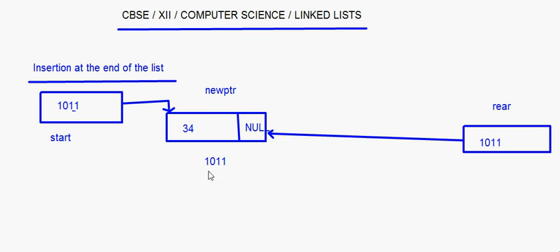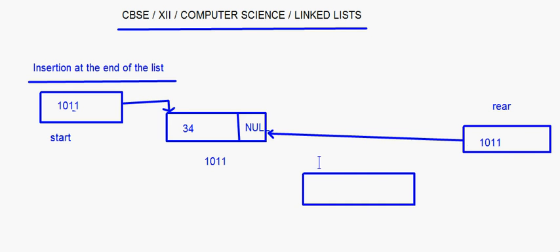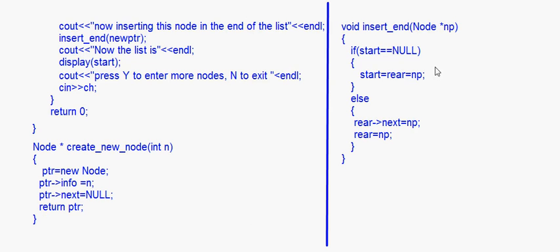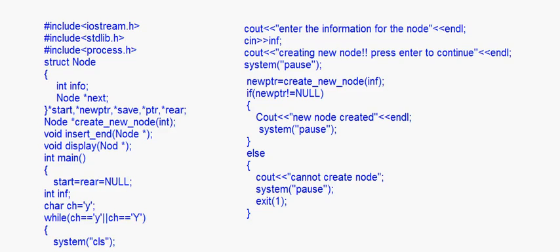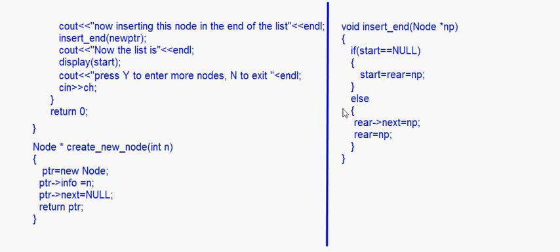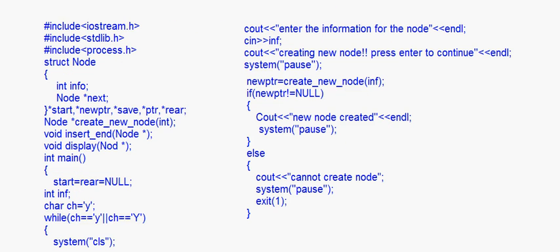The first node has been created. Now we will create one more node. I'll remove new ptr from the previous node and create a new node with information 78 — whenever we create a new node, the next of the new node is always null. This new node has to be linked to the list at the end, after the first node. Now taking the second condition: start is not equal to null, so we come to the else part. In else, rear next is equal to np and rear is equal to np — two steps.